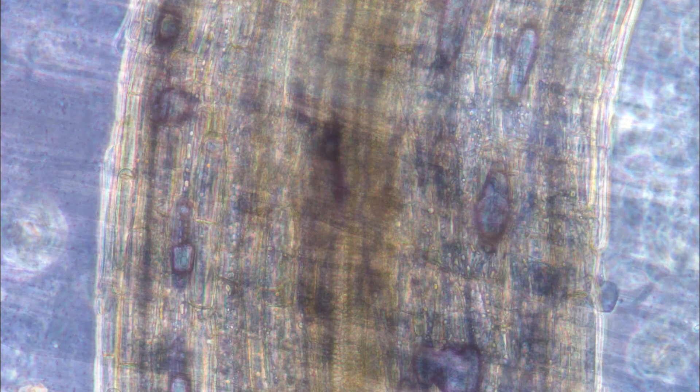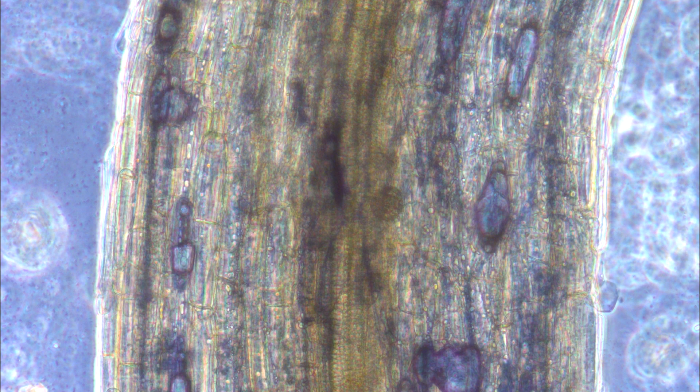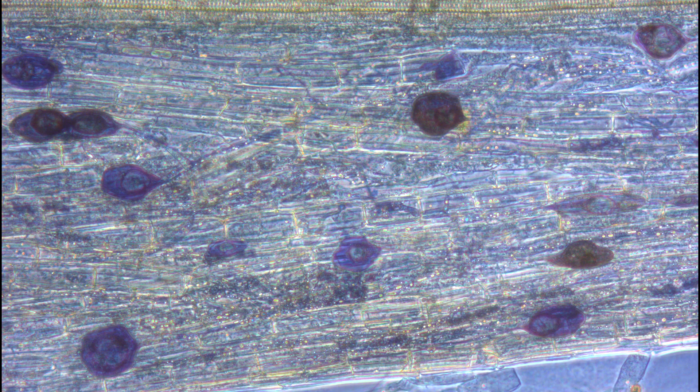The hyphae penetrate the roots and can branch out in complex networks throughout the soil. This staining procedure will allow you to observe the different structures of arbuscular mycorrhizal fungi, also known as AMF.